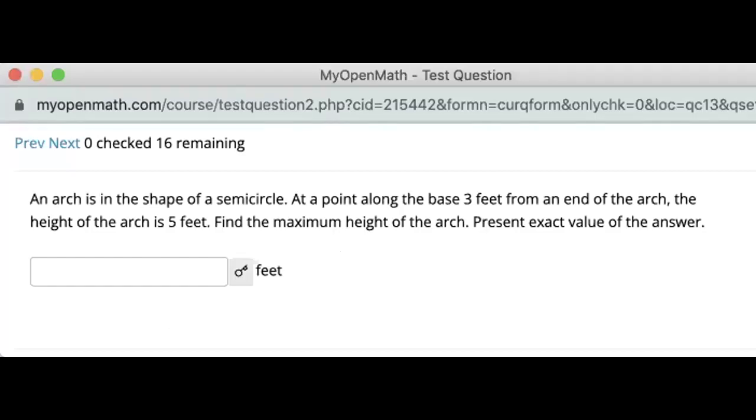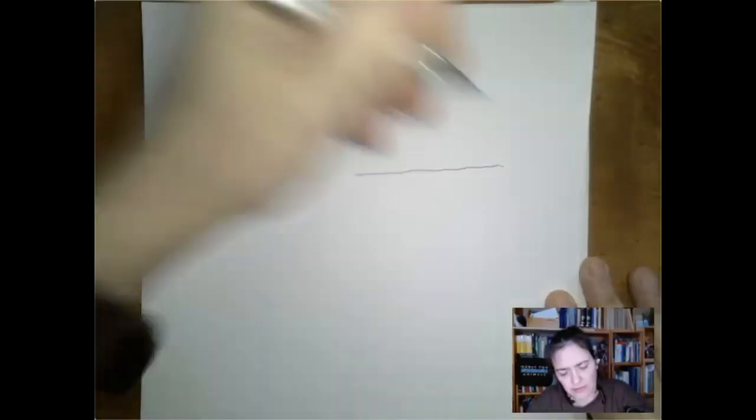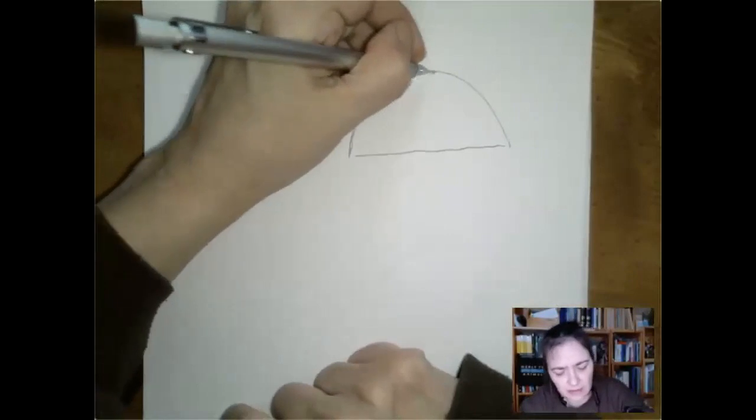So this is a very nice little problem, and we're dealing with an arch, an arc, that is in the shape of a semicircle.